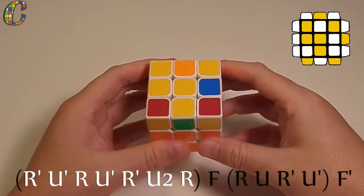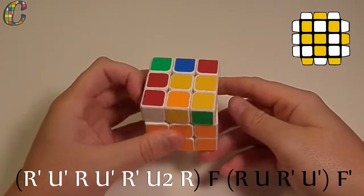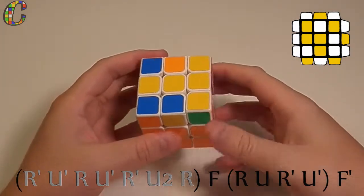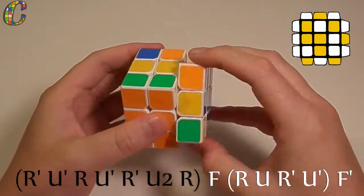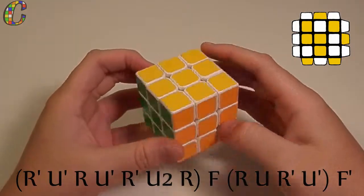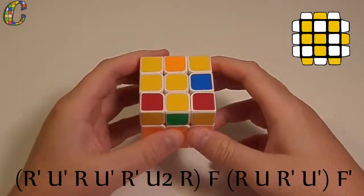You do anti-soon, r prime, u prime, r, u prime, r prime, u2, r. And then that gives you this case again, which is f, r, u, r prime, u prime, f prime. And that will orient your layer. And here's how I execute this case.